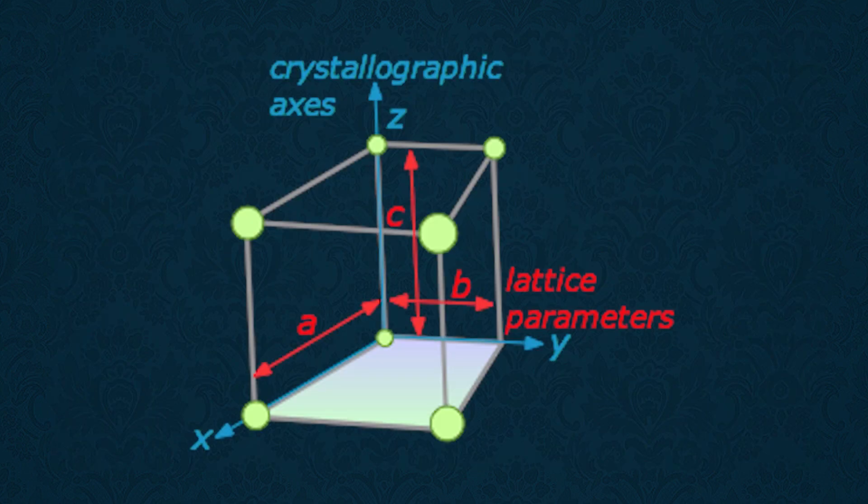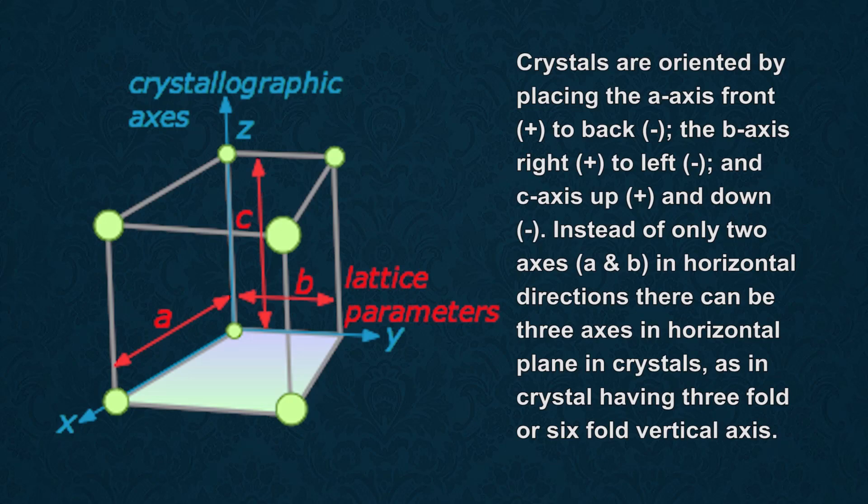There is also a convention for orienting A, B, and C crystallographic axes, whether orthogonal or oblique axes. Crystals are oriented by placing the A axis front (positive) to back (negative), the B axis right (positive) to left (negative), and C axis up (positive) and down (negative). Instead of only two axes A and B in horizontal direction, there may be three axes in horizontal plane in crystals, as in crystals having three-fold or six-fold vertical axis.